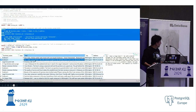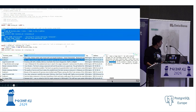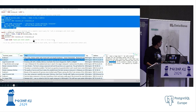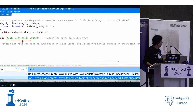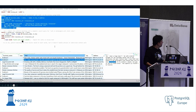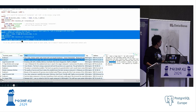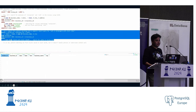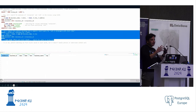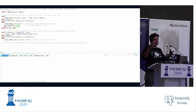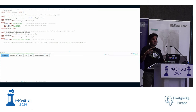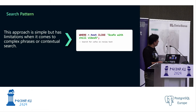But what if I try to search for something more nuanced — coffee with chill vibes? I get nothing. That's expected. iLike is a basic pattern-matching search; it does an apple-to-apple, orange-to-orange comparison. It does not understand context.